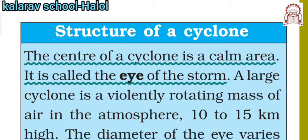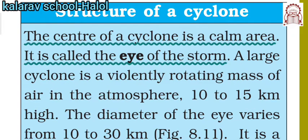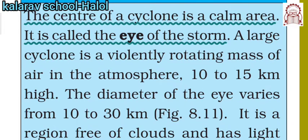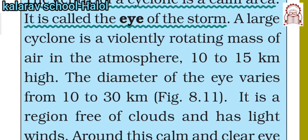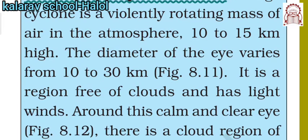Next is cyclone. The center of the cyclone is a calm area called the eye of the storm. A cyclone is a violently rotating mass of air in the atmosphere. Its speed is very high — 10 to 150 kilometers per hour. It is a region where there are free clouds and light wind at the center.